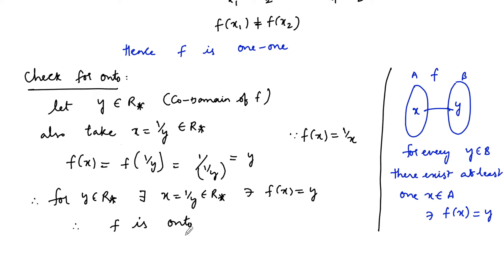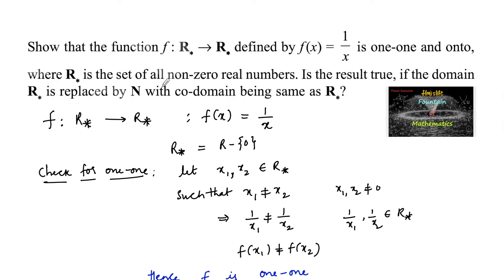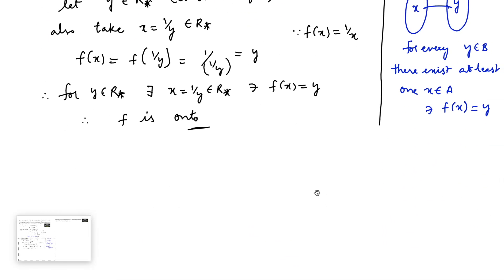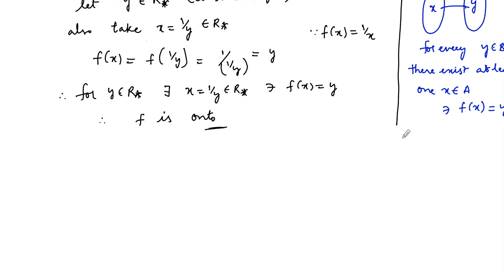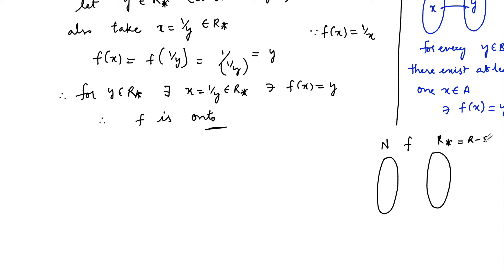Now let's check the same when the domain ℝ* is replaced by ℕ (natural numbers) with the codomain remaining the same ℝ* = ℝ \ {0}. So f is a function defined from ℕ to ℝ*, and f(x) = 1/x.